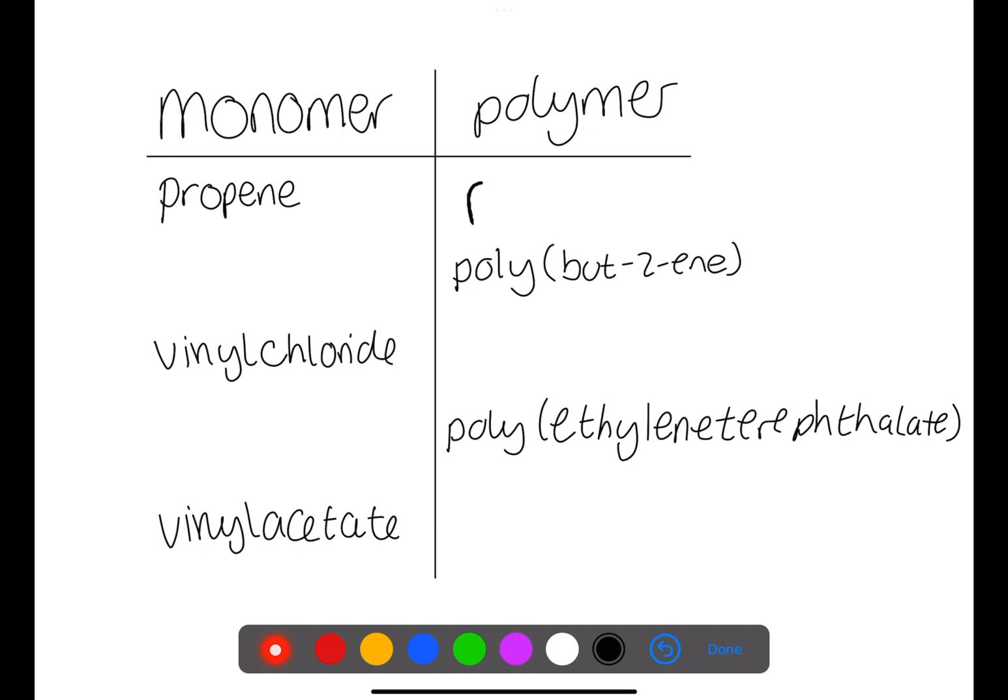The first monomer is propene. This means the name of the polymer will be polypropene. The second polymer is called polybutylene. This means the monomer is called butylene. The third monomer is vinyl chloride. The polymer will be polyvinyl chloride.